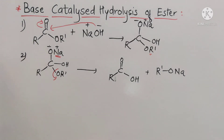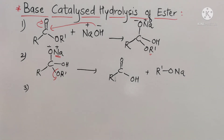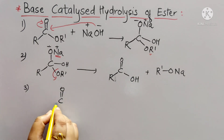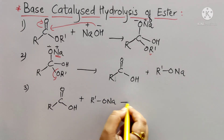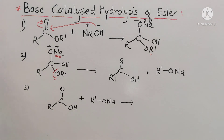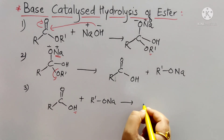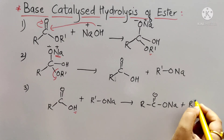In the third step, the alkoxide ion is highly basic and it immediately accepts the proton from the carboxylic acid. This is the proton transfer step. The carboxylic acid donates a proton to R'-ONa. As a result, R-C(=O)-ONa is formed plus R'-OH, which is the alcohol.